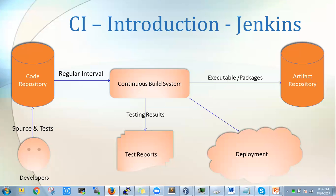An important thing about Jenkins is that it is free, coming under the MIT license. There is a large support community and a lot of documentation already written for Jenkins. What can Jenkins do for us? It can generate test reports, integrate with many different version control systems such as Git, push various artifacts to repositories, deploy directly to production or test environments, and keep notifying stakeholders about build status. These are the advantages we can get from Jenkins.